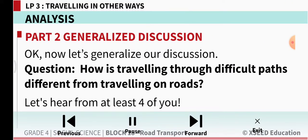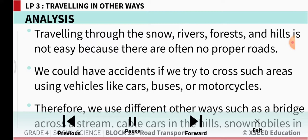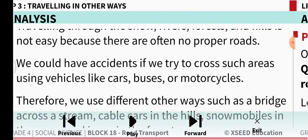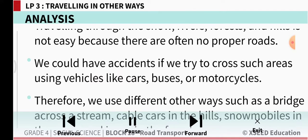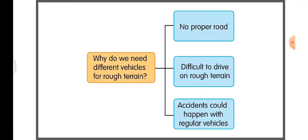How is traveling through difficult terrain different from traveling on roads? Traveling through snow, rivers, forests, and hills is not easy because there are often no proper roads. We could have accidents if we try to cross such areas using regular vehicles like cars, buses, or motorcycles. Therefore, we use different ways: bridges across streams, cable cars in the hills, snowmobiles in the snow, and jeeps in the forest.